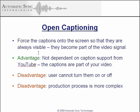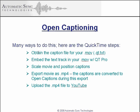To open caption a video, you generally start by closed captioning it, then export the video with the captions being displayed, rendering the captions right into the video stream. Here's a summary of the steps using QuickTime Pro: obtain the caption file for your MOV file — that's the qt.text caption track — then embed this text track in your MOV file using QuickTime Pro, and scale and position your captions where you want them on the screen. You can find a tutorial in the QuickTime section of our how-to videos at www.automatic-sync.com/help. Then export the movie as an MP4 file, which will render the captions into the video stream. Finally, upload the MP4 file to YouTube and you're done.